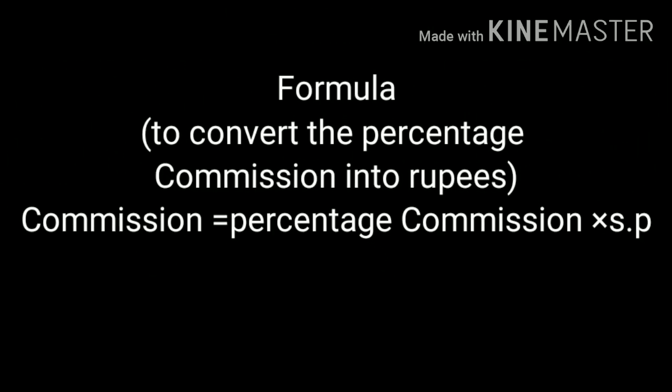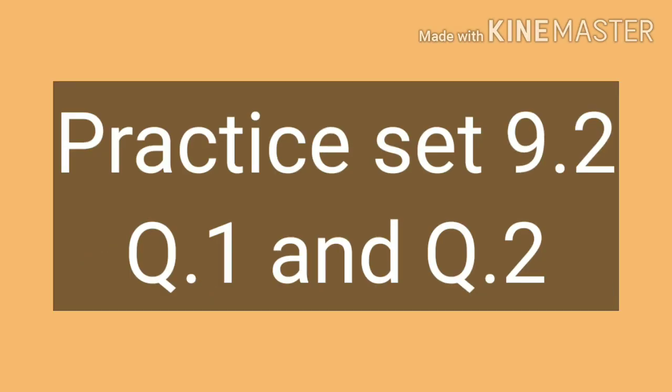Here is the formula: Commission (in rupees) = Percentage Commission × SP, where SP means Selling Price. Now let's begin Practice Set 9.2.